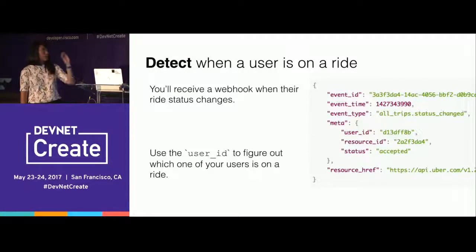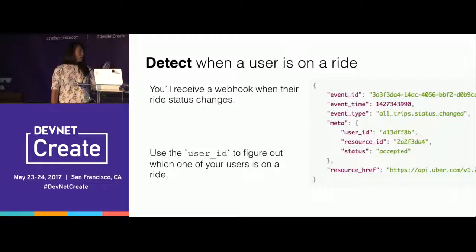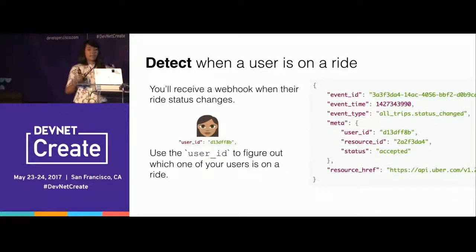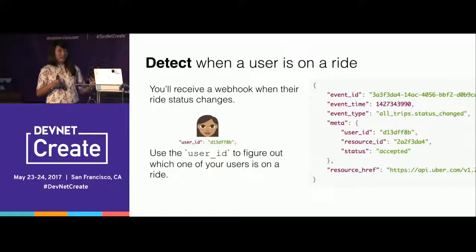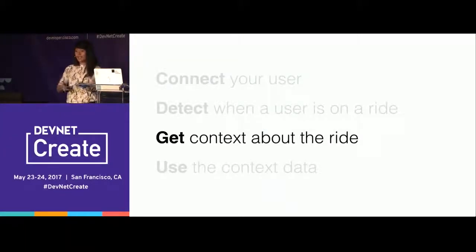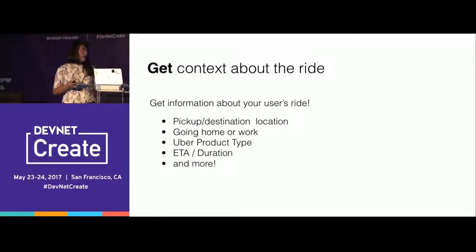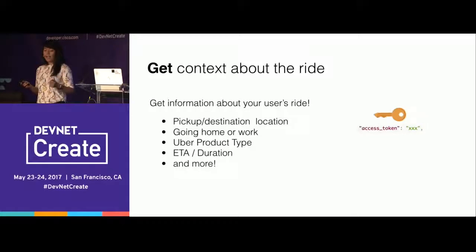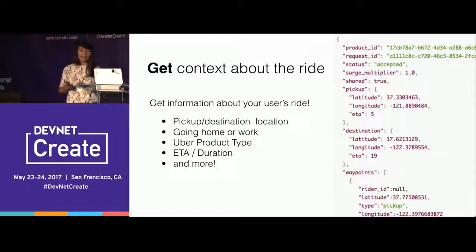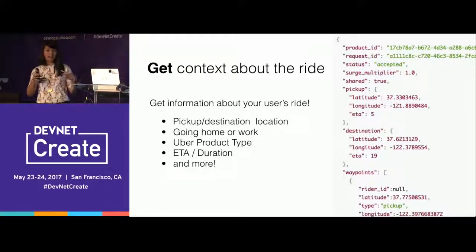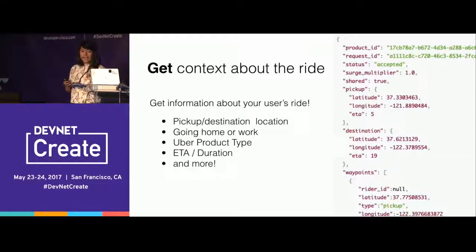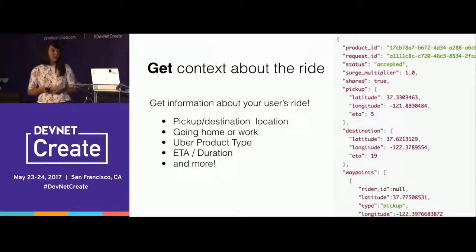Every time a user gets on a ride, you'll receive a webhook when the ride status changes — received at the dashboard URL you configured. You can use the saved user ID to figure out which of your users is on a ride. This webhook tells you in real time that the user is actually riding so you can do something useful for them. You then get context: using the access token, you can retrieve metadata including where they're going and how long the ride will take.